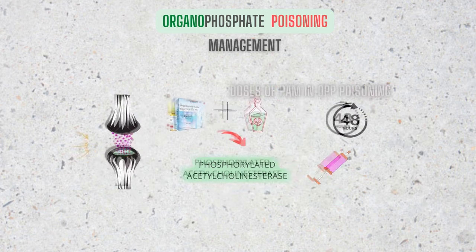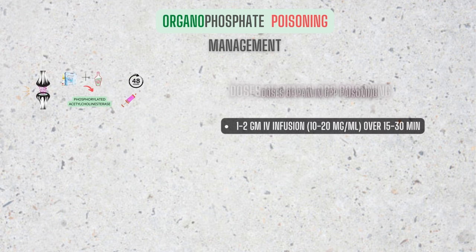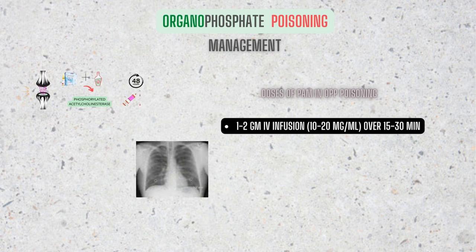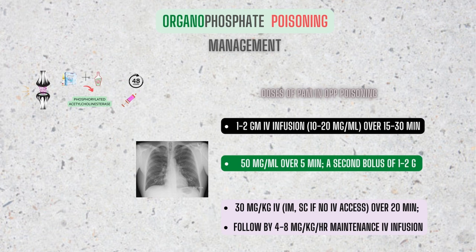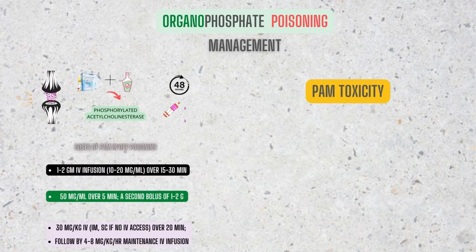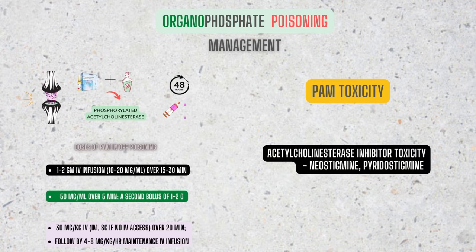Regarding doses of PAM in organophosphate poisoning: 1–2 g IV infusion over 15–30 minutes should be given primarily, then repeated in 1 hour if necessary. If pulmonary edema is present or fluid restriction is necessary, administer as 50 mg/mL over 5 minutes; a second bolus of 1–2 g may be indicated after about 1 hour if muscle weakness has not been relieved. Alternatively, administer 30 mg/kg IV over 20 minutes, followed by 4–8 mg/kg/hour maintenance IV infusion. In case of PAM toxicity, acetylcholinesterase inhibitors such as neostigmine or pyridostigmine can be used. In case of renal impairment, use reduced doses.